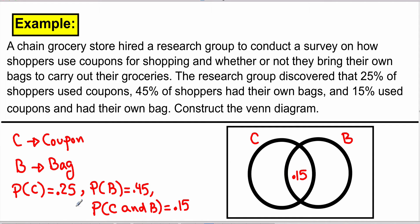We subtract 0.15 from 0.25 to get 0.10 for the rest of C. Then we subtract 0.15 from the total probability of B, which is 0.45, and that gives us 0.30. To complete the Venn diagram, we make sure the sum of all numbers inside equals 1, so we add all the numbers inside and subtract from 1, and that gives us 0.45 outside of circles C or B.